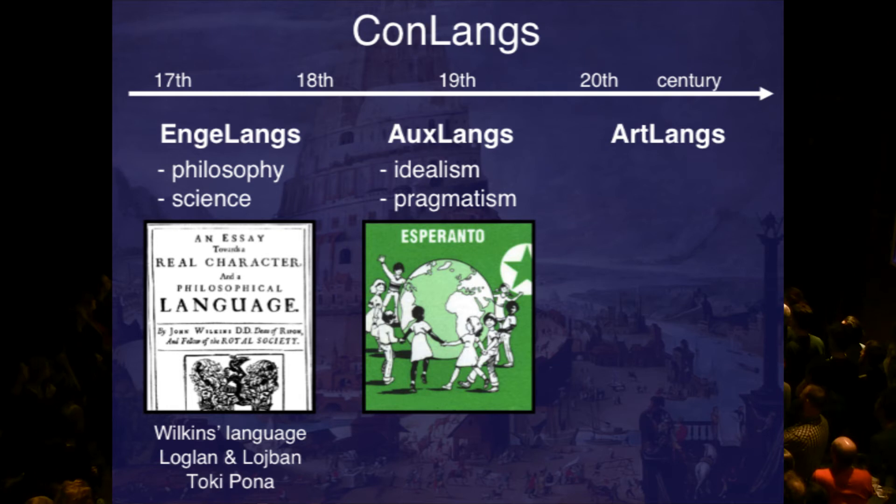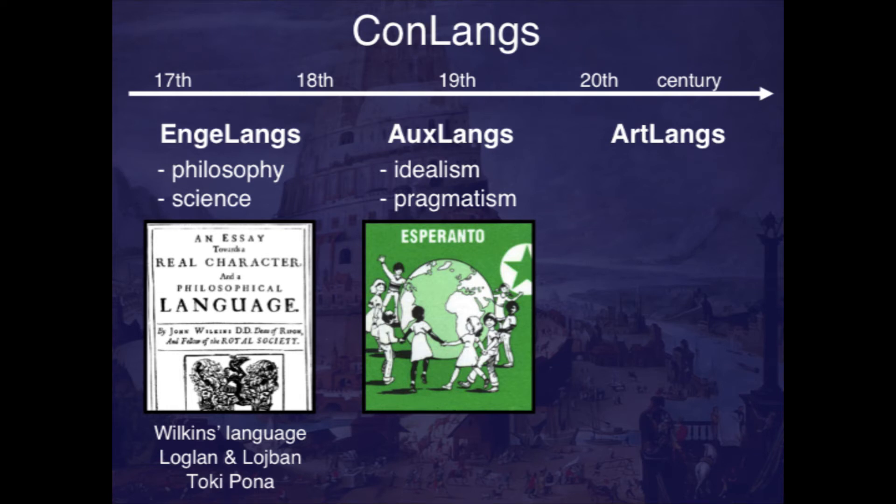So this was the first group I wanted to tell you about. People are still constructing Engelangs today, but the golden age has passed, because people got a little bit tired of all this kind of deep thinking and wanted something more pragmatic. In the 19th century, the constructed language field got dominated by auxiliary languages — auxlangs — which have usually idealistic backgrounds and are very pragmatic. And this group is dominated by Esperanto, because it became the most successful constructed language.